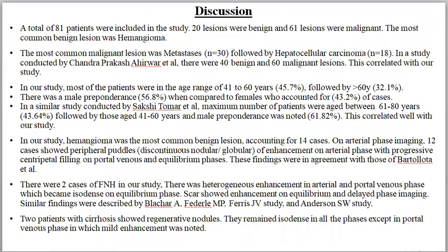In the discussion, a total of 81 patients were included; 20 lesions were benign and 61 were malignant. The most common lesion was hemangioma, and the most common malignant lesion was metastasis seen in 30 patients, followed by hepatocellular carcinoma in 18 patients. A study by Chandrasekhar Prakash Ahirwar et al. found 40 benign and 60 malignant lesions, which correlated with our study. Most patients were aged 41 to 60 years with male preponderance, correlating with a similar study by Sakshi Tomar et al., where maximum patients were aged between 61 and 80 years.